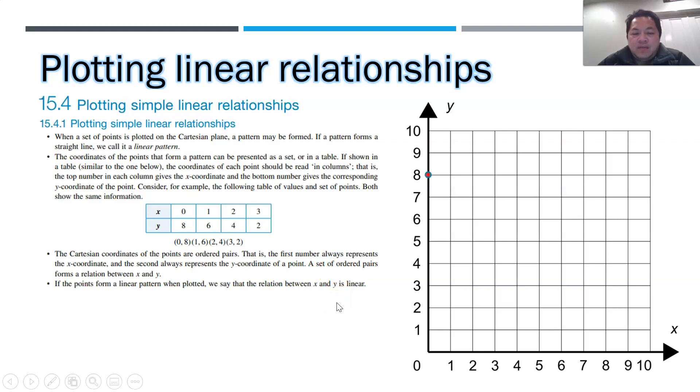And we will plot them onto the Cartesian plane and let's see what we get. 0, 8 is here, followed by 1, 6, followed by 2, 4, followed by 3, 2. And I actually could use a straight line to join them together. And when that happens, it simply means that the points are linear. Linear means it's a straight line. So the relationship between x and y is linear for this case.